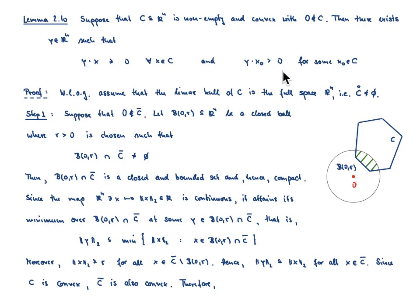The proof proceeds in two steps. First, I assume without loss of generality that the linear hull of the convex set C is the full space R^n, which is equivalent to saying the interior of C is non-empty. If the linear hull is not the full space, then by convexity C lives in an affine subspace, so we can restrict via a suitable mapping to a lower-dimensional space and apply the result from there.